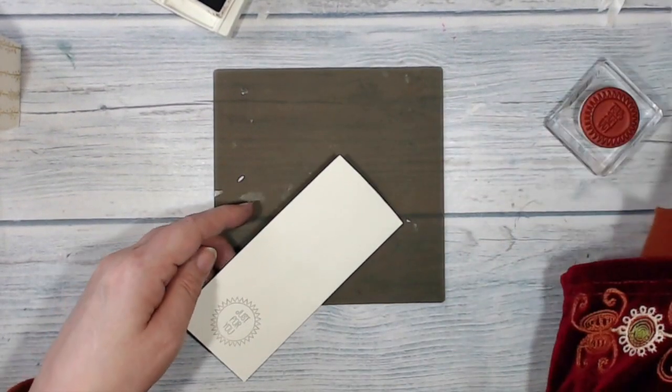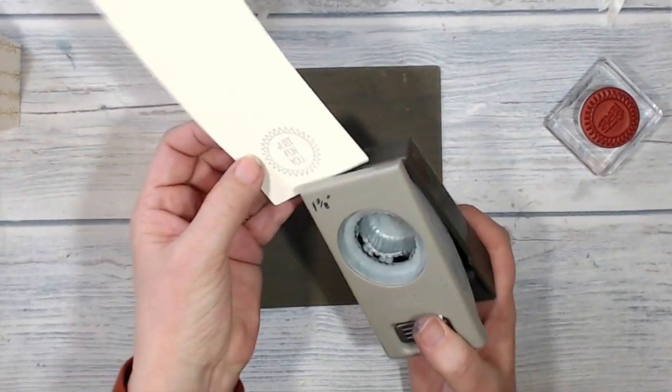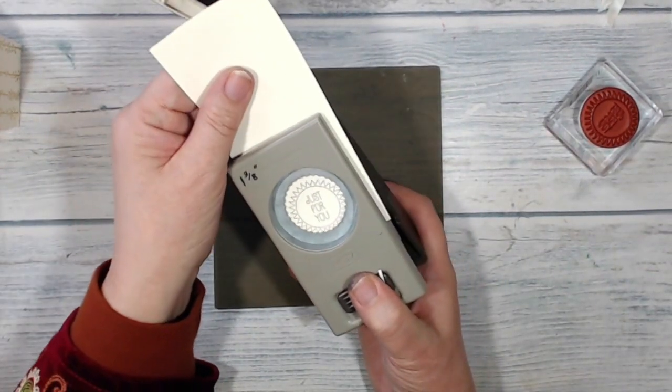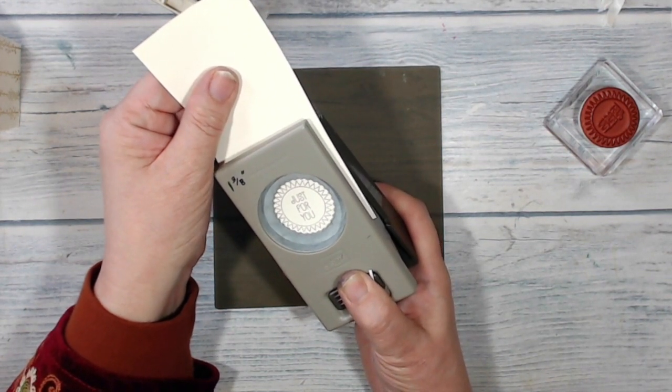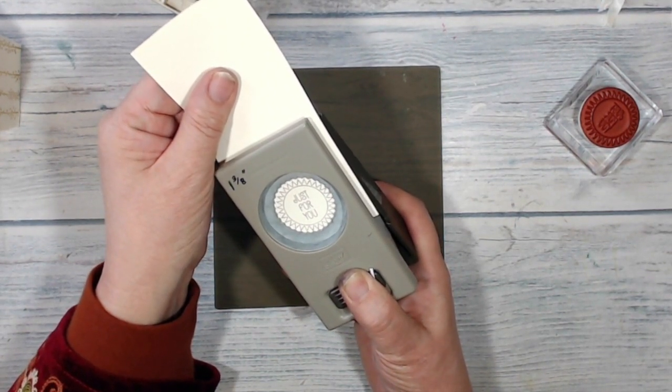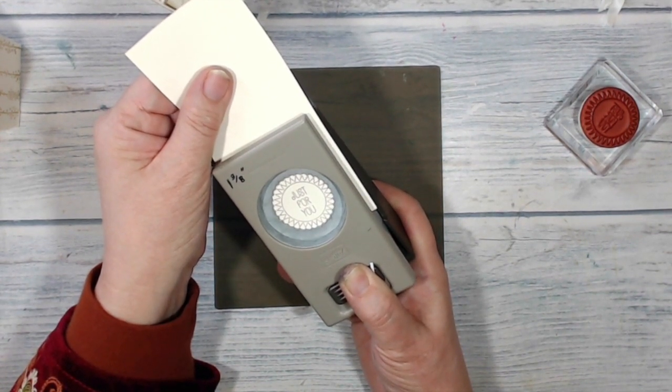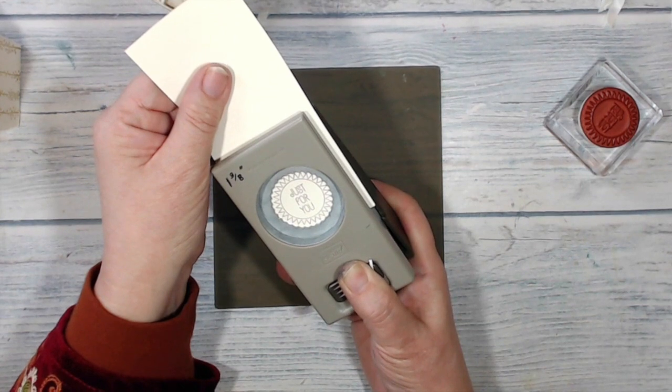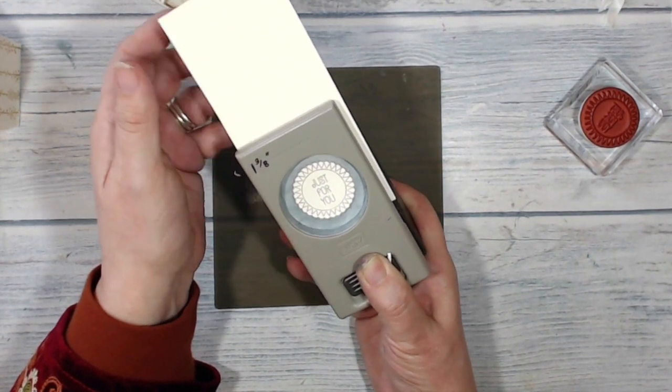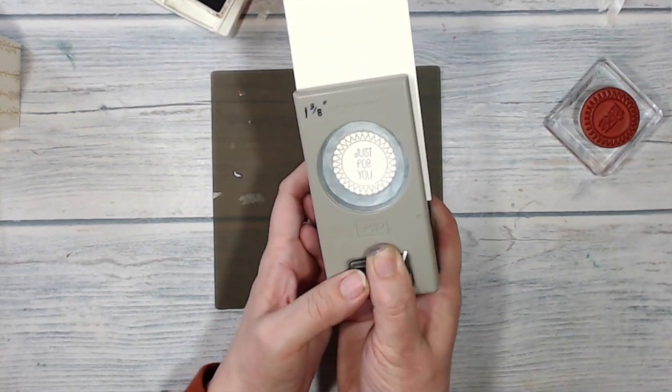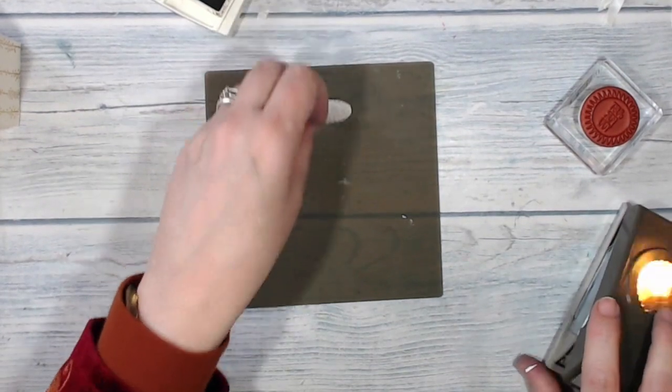Now I'm going to bring in the one and three-eighths inch scalloped circle punch. I'm going to center my image in the punch and I'm kind of half pressing down on the punch so that it sort of holds it but doesn't go all the way. When I'm happy with my positioning, I just finish that all the way.